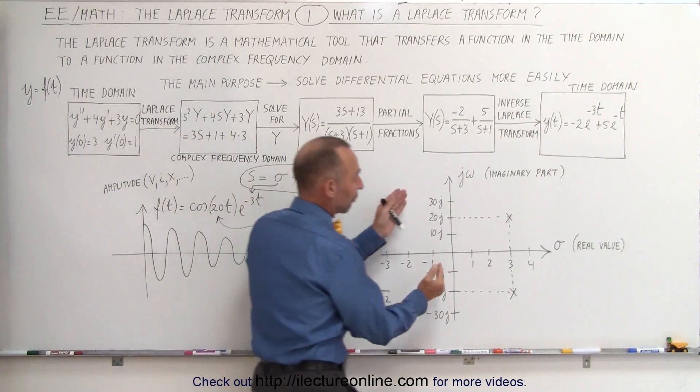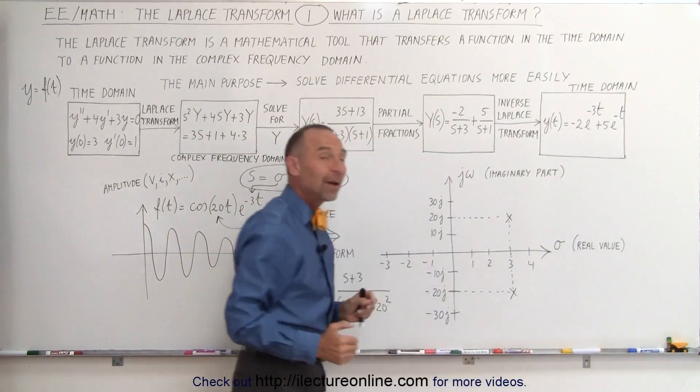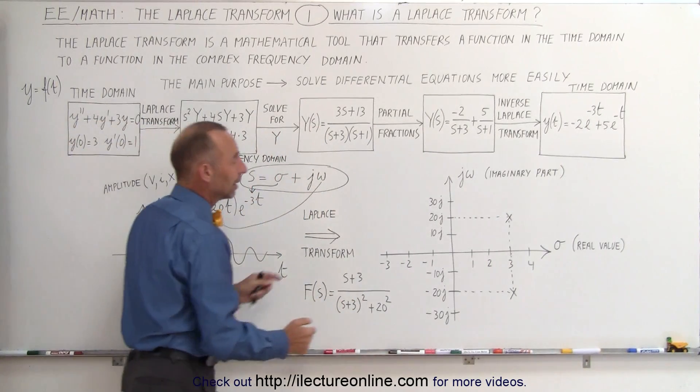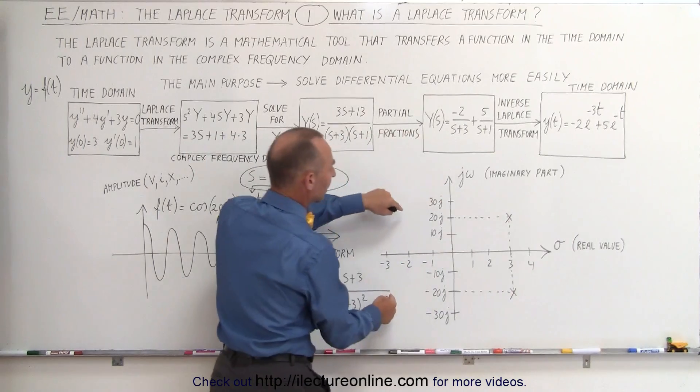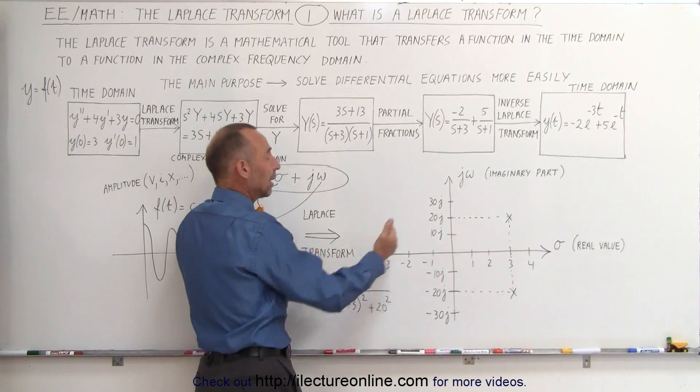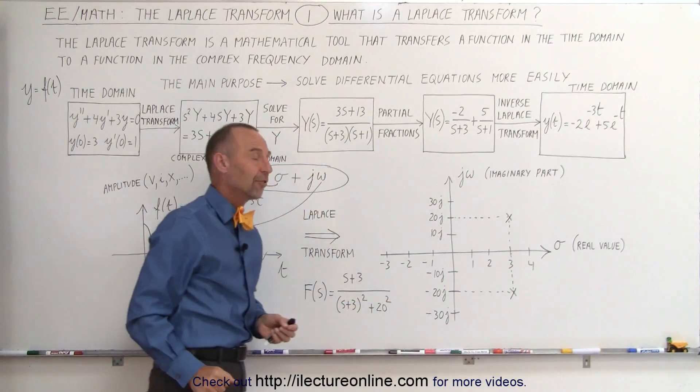The faster it decays, the farther these points right here would be drawn to the right. If we have an exponential growth function, if this was a positive value right here, then our x's would be on the other side. And of course, if the x's would be on this side, that would then indicate that we have a growth function. If it's on the right side, we have a decay function.